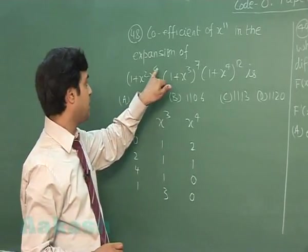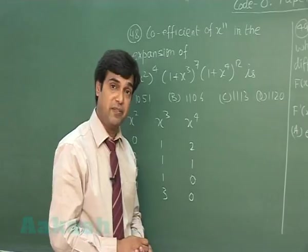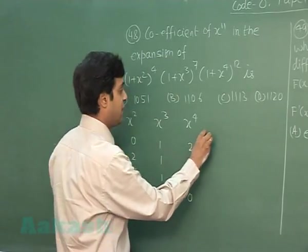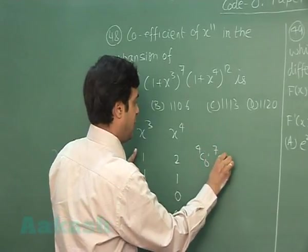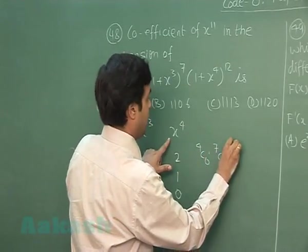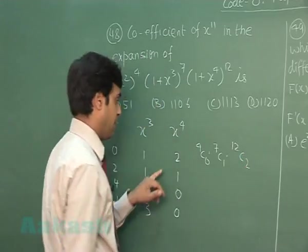Whole to the power for these terms are 4, 7 and 12 respectively. So, we need the result as 4C0, 7C1, 12C2. Product of these three.